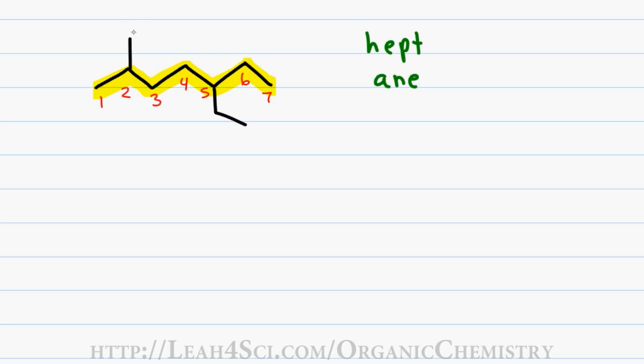Now let's look at the substituents. On carbon number 2, I have a single carbon substituent. This is a 2-methyl and on carbon number 5, I have a 2-carbon substituent which gives me the name 5-ethyl.